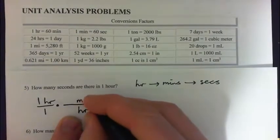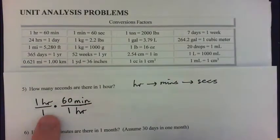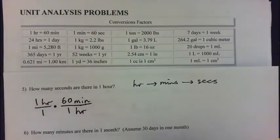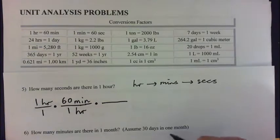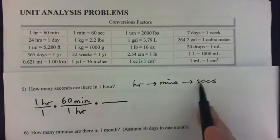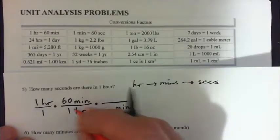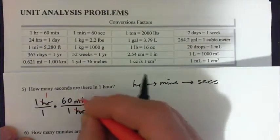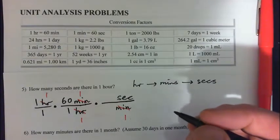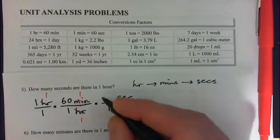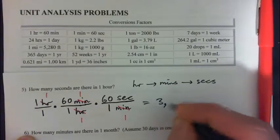Write one hour as one hour over one, then multiply by something. You've got to make sure you have hours in the denominator so the hours cross-cancel. We want to go from hours to minutes and then from minutes to seconds. In one hour there are 60 minutes — that cross-cancels. Then, in one minute there are 60 seconds, so the minutes cross-cancel too. We have 60 times 60 seconds, which is 3,600 seconds.